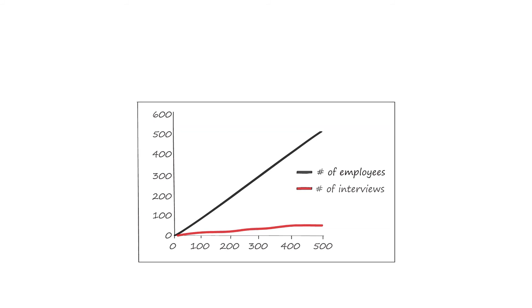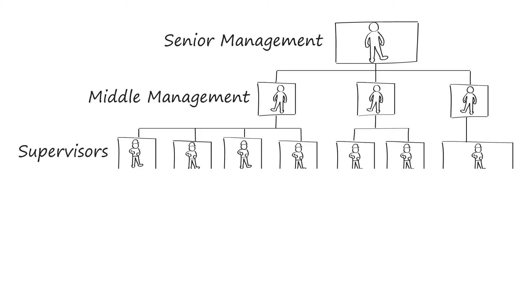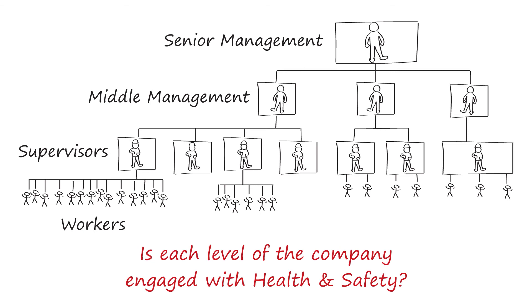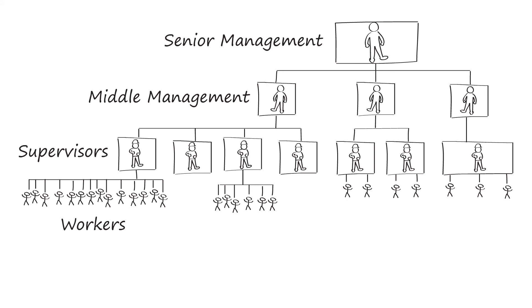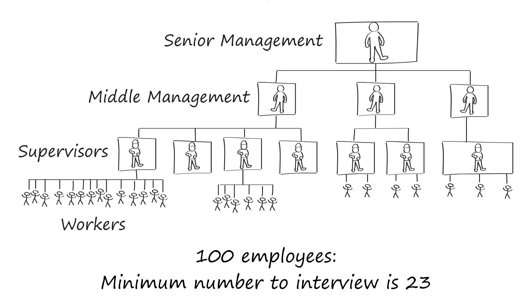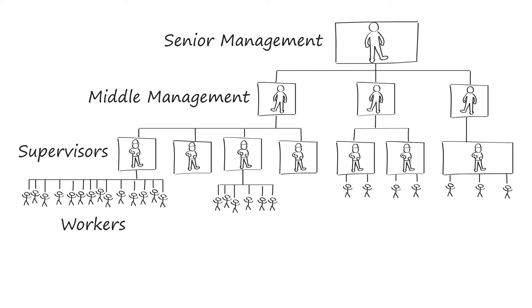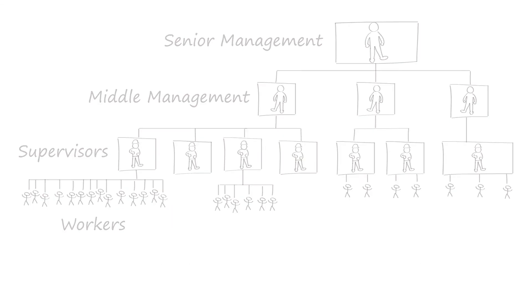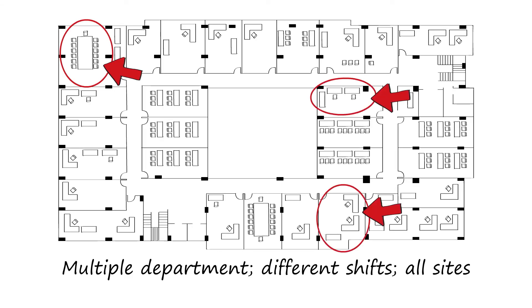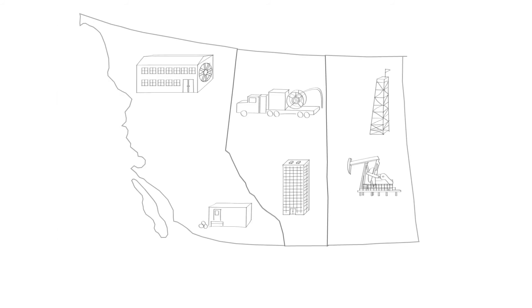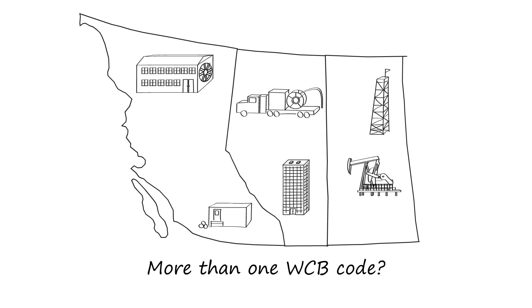That's the basics of sample size. Now, when it comes to interviews, you are not just after a snapshot of the workforce as a whole. You need a snapshot of where a company's senior management, middle management, supervisors, and workers are at. The audit is concerned that each level of the company is engaged as they should be with matters of health and safety. If you're looking at a company of 100 employees, the minimum number of employees you should interview is 23. But to get that accurate picture, the standard also says you want to interview both new hires and experienced workers, capture multiple departments, workers from different shifts, and from all the sites you are visiting. If the company is in multiple provinces or has more than one WCB account or industry code, you want representatives from all of these.